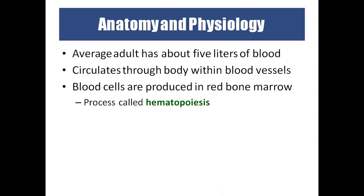On average, an adult human has five liters of blood circulating throughout the body within blood vessels. We call this a closed circulatory system because the blood always flows inside blood vessels. Blood cells are produced in the red bone marrow — erythrocytes, leukocytes, and thrombocytes — and this process of blood production is called hematopoiesis.